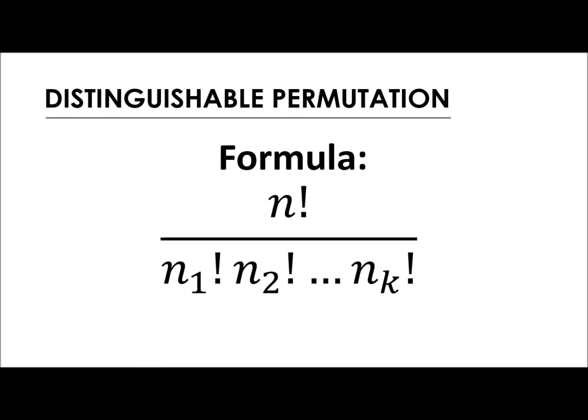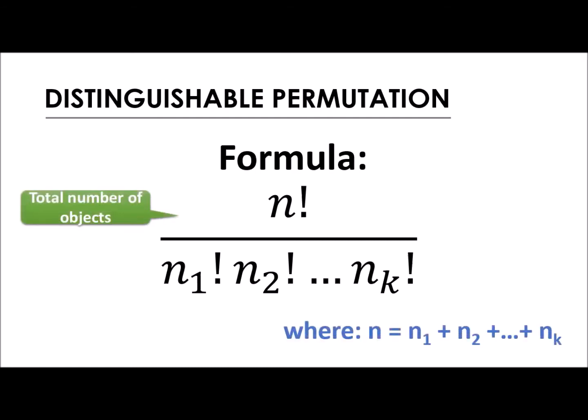The formula for distinguishable permutation is n factorial all over n-sub-1 factorial times n-sub-2 factorial times n-sub-3 factorial, until n-sub-k factorial. Ang value ng n is always the total number of objects. At yung mga n-sub-1, n-sub-2 na yan, yan naman yung pinag-uusapan nating similar objects — kasi pwede mong pagpalit-palitin ng pwesto, kaya pina-factorial natin yung mga similar objects na yun.